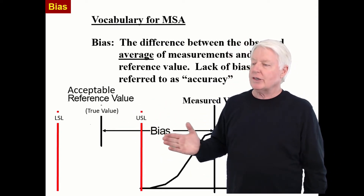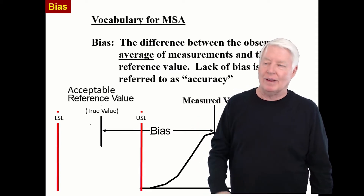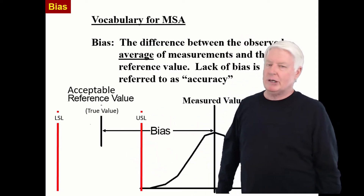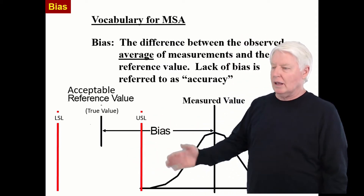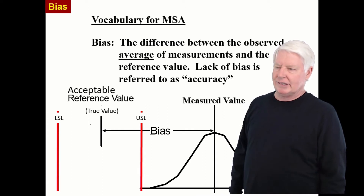In other words, it's called error — measurement error. But measurement people don't call it error; they call it bias. So keep that in mind.